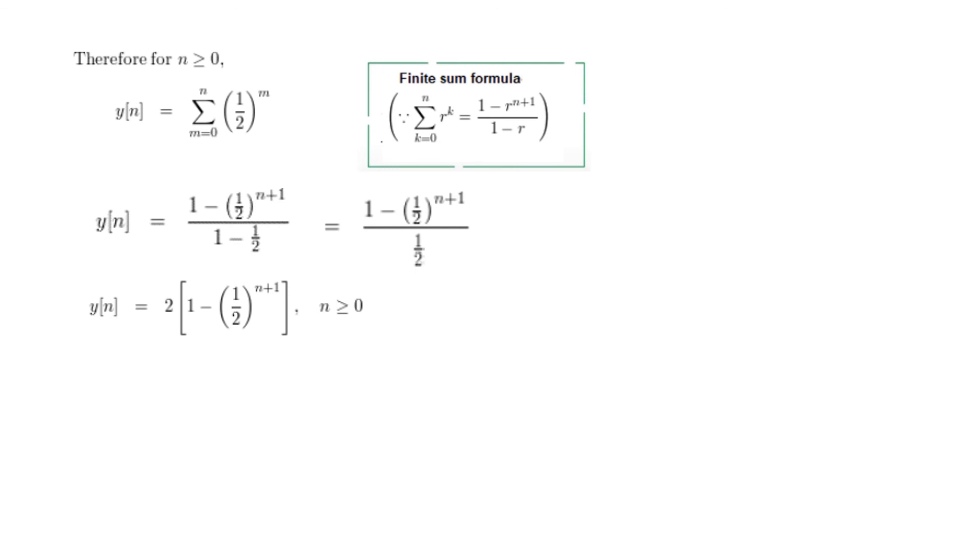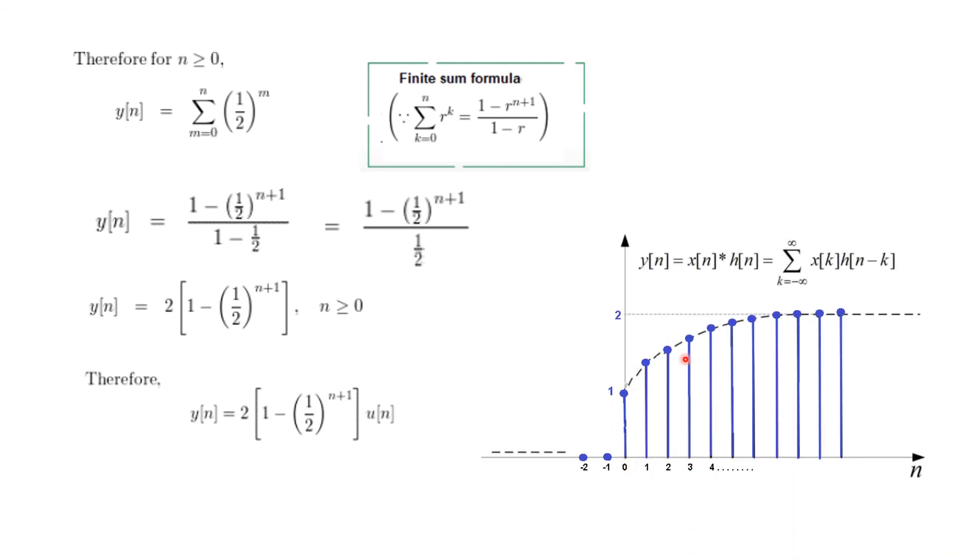And instead of writing it to be valid for n greater than 0 we can just write u[n] with the answer, so this means the same thing. So this is the final answer. And to plot you can start putting value of n: 0, then 1, then 2 etc and you will get a plot something like this. So let's see just the first one when n is 0, half power 1 will be half, 1 minus half will be half multiplied by 2 will be 1, so this is our starting point and it will keep on increasing. You can write couple of values of n and calculate. So the graph will be something like this. So I hope this gives you an understanding how you can solve this type of problem. Thank you.